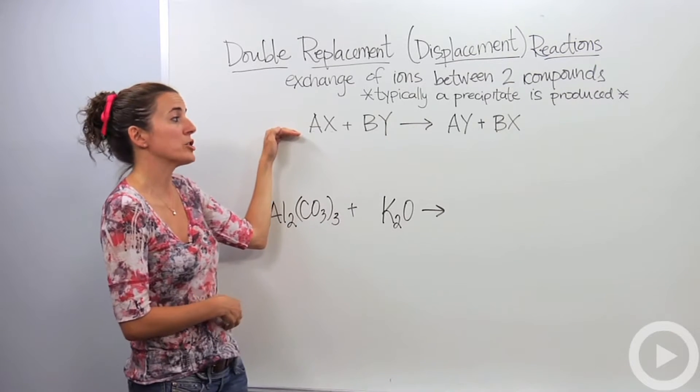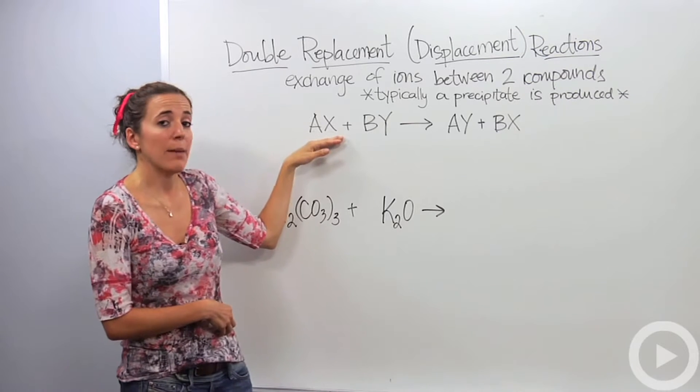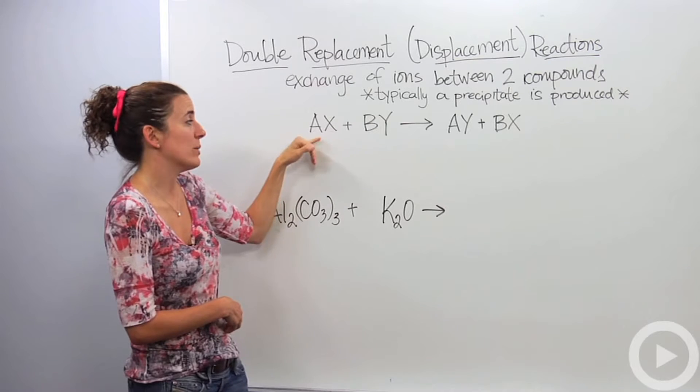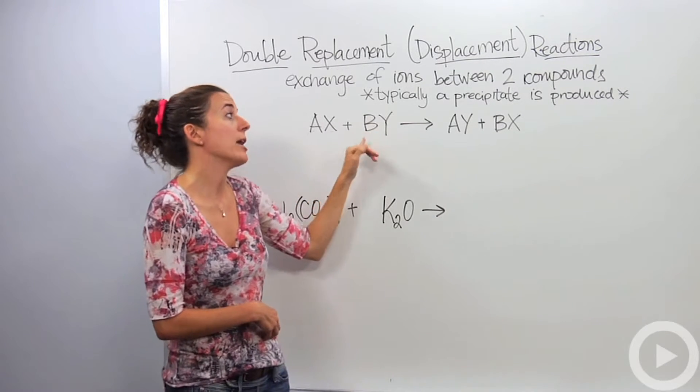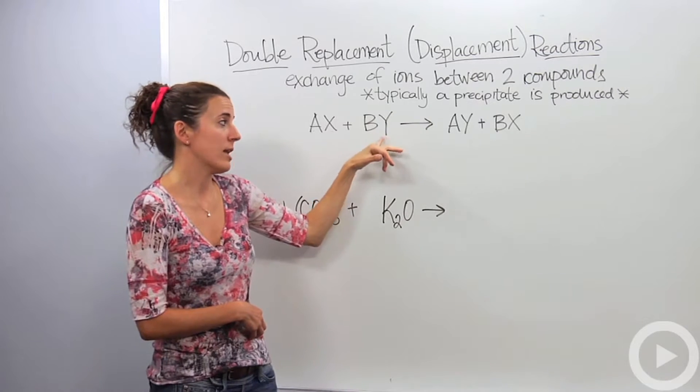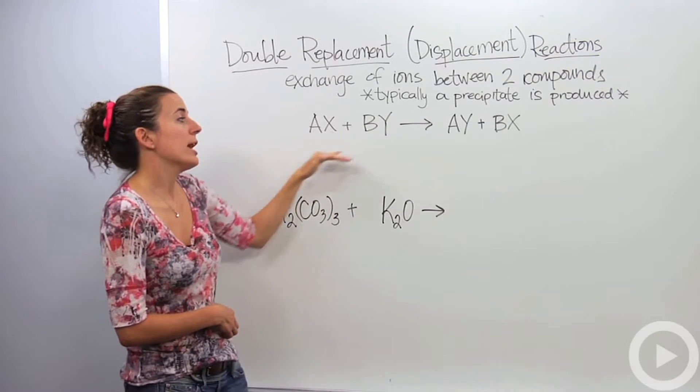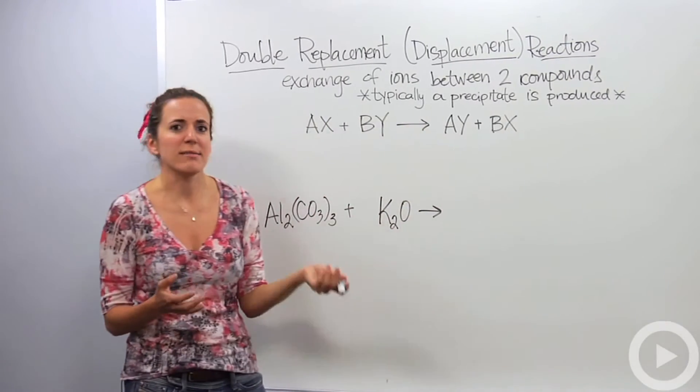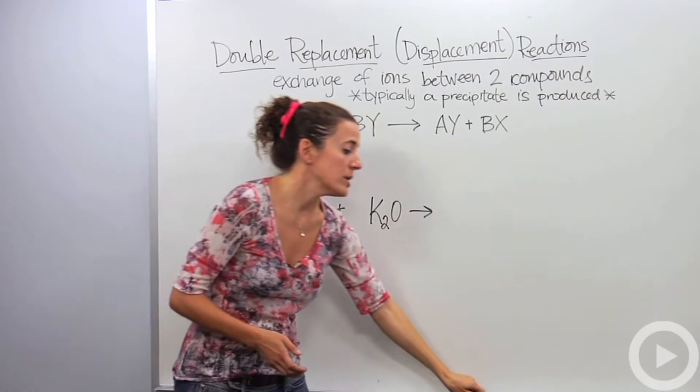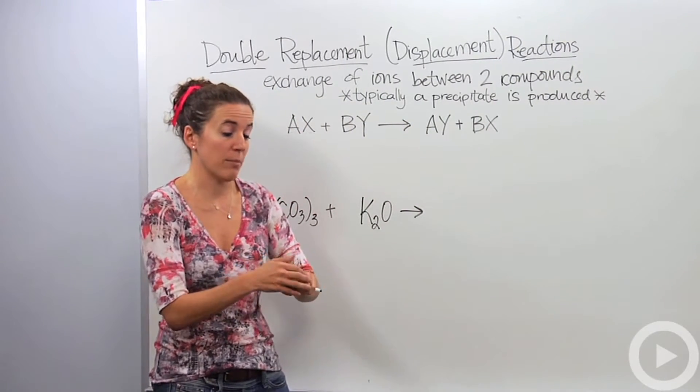So here's a skeletal equation of what a double replacement reaction looks like. We have AX, and this happens in ionic compounds, so we have AX where A is a metal and X is a non-metal plus BY, again B is the metal, Y is the non-metal. Don't forget metals always come first in ionic equations. So they're going to actually change up partners. Metals don't want to be with metals and non-metals don't want to be with non-metals, so they're actually going to switch partners and switch them completely.